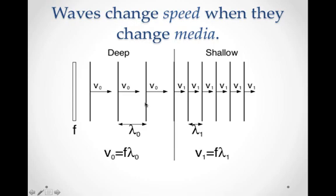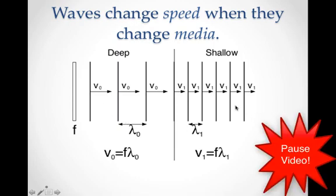Once the wave gets going, the frequency has already been determined. In the deep water, the waves would go faster than they'll go in the shallow water. And so what happens is these waves at this boundary, since they're going more slowly, they actually end up having a shorter wavelength. So these two wave speeds are different when you go from one medium to another.